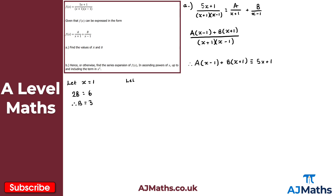Now we substitute another value of x to eliminate b. If we let x equal minus 1, then b times (−1+1) = 0, so b disappears. We get a times (−1−1), which is −2a. That equals 5 times −1 plus 1, giving −4. Dividing both sides by −2 gives a equals 2. So that's the solution to part a: a equals 2 and b equals 3.